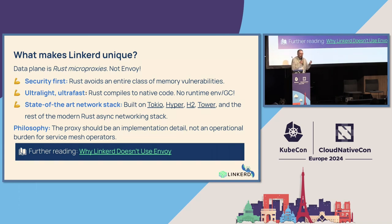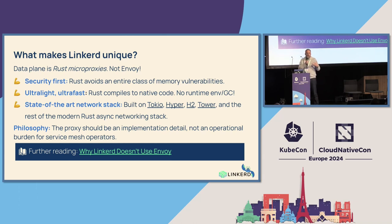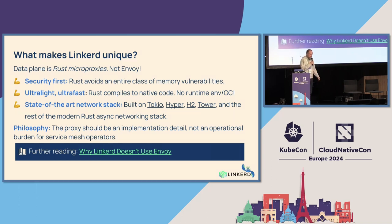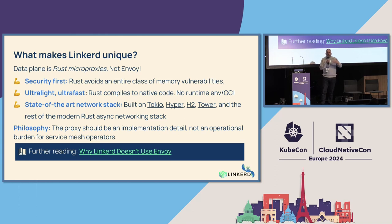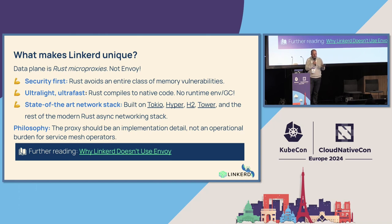The state of the art in user space networking is all happening in Rust — these libraries are where all the brightest minds of asynchronous networking go to spend their time, so we get to take advantage of really cool stuff happening under the hood. From the operator perspective, we really want this proxy to be an implementation detail. We don't want you to have to think about the proxy as a new operational component that you have to care for and maintain.